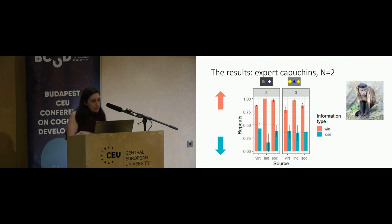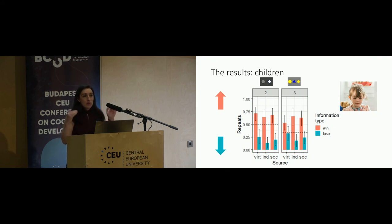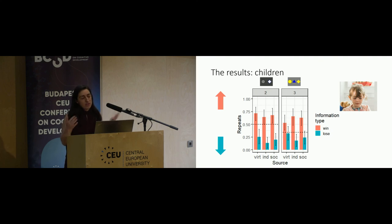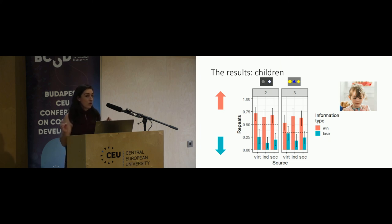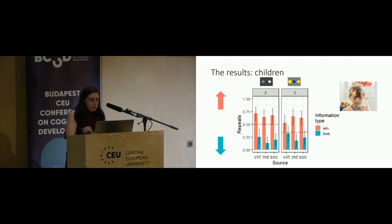The children had in common with the expert capuchins that they were also much better at repeating after a win than after a lose. However, there was no difference in repeating behavior based on source—they didn't copy their own or others' behavior any more than any other type of information. One striking thing was there was much less copying of the rewarded item by children compared to the capuchin monkeys.